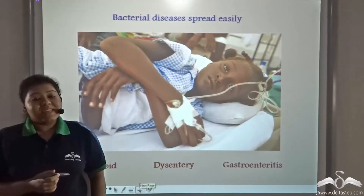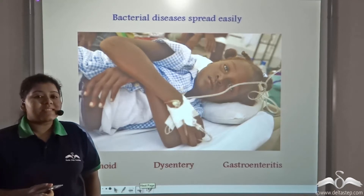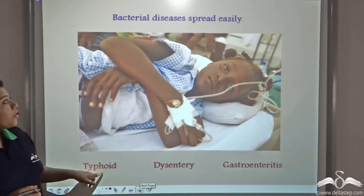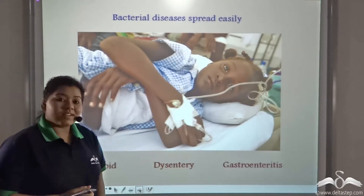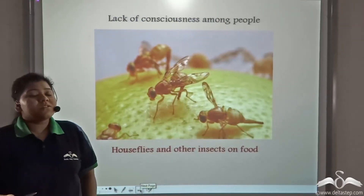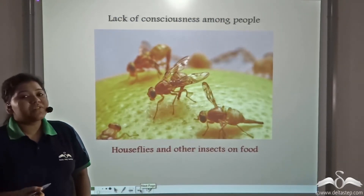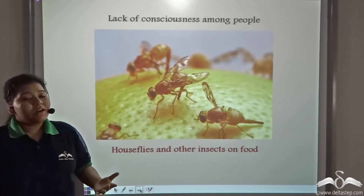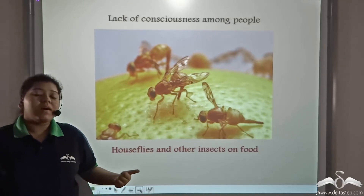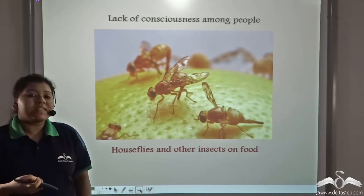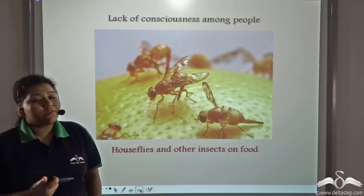In this dirt and filth, bacterial disease is spread very easily — bacterial diseases such as typhoid, dysentery, and gastroenteritis. Not only because of unclean surroundings, but most of the time people lack consciousness of the flies that alight on their exposed food. These flies bring with them a lot of bacteria that causes diseases in us, and when we consume this contaminated food, we fall sick.